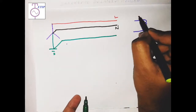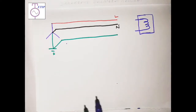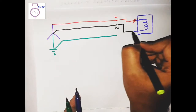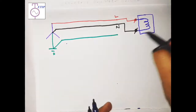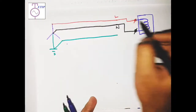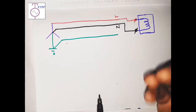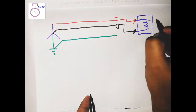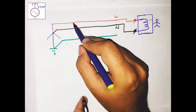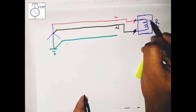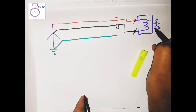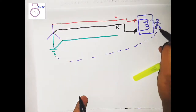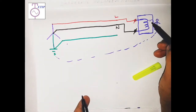Suppose this is my load and this is its enclosure. If I connect line to one end and neutral to the other end, the load will operate and current will flow. However, there is an accidental possibility: if the insulation between the winding and the enclosure damages, or a conductor breaks and touches the enclosure, and a person touches it, current will flow through the line conductor, through the broken insulation, through the person's body to earth — causing a huge shock.